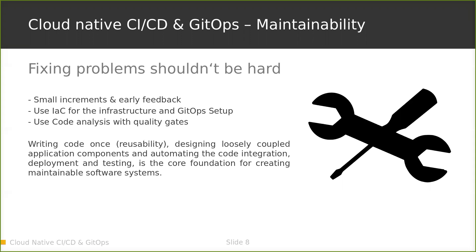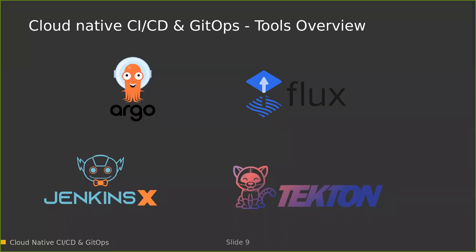Now a short look at the available tools — there are many, but the most prominent GitOps solutions are ArgoCD and Flux. These are the two most widely used GitOps solutions currently. Interestingly, the two applications have been merged into one called ArgoFlux. For today's demo we will use ArgoCD as our GitOps engine. On the CI side, Jenkins X is the cloud native CI/CD solution based on Kubernetes and built on top of Tekton, which is the other CI/CD solution. Today we'll use the pure Tekton solution.